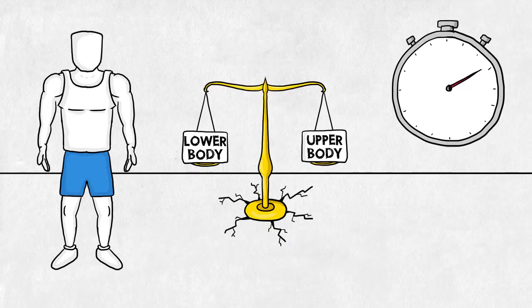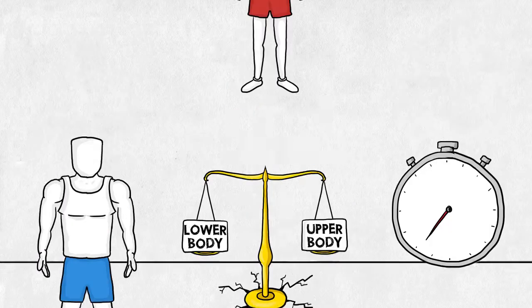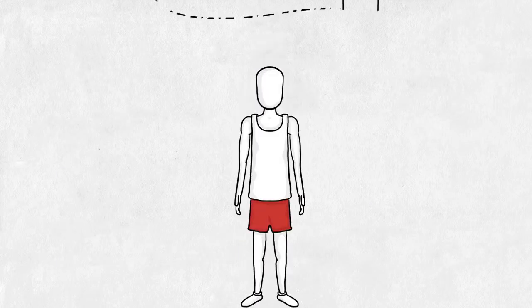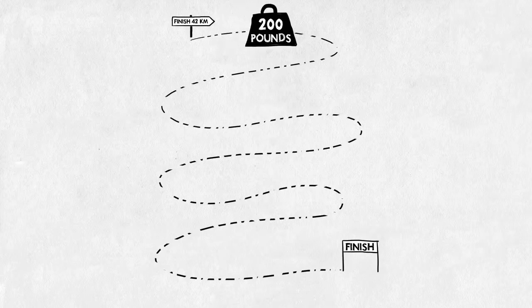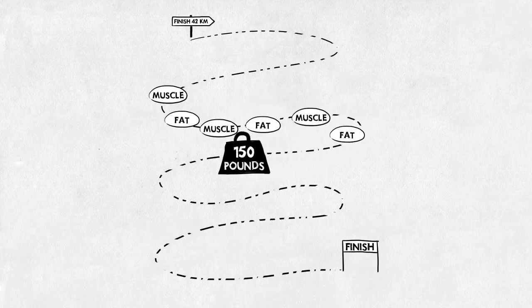And because the sprinter only has to perform for a couple of seconds, the added weight is trivial. The marathoner is a different story. Every pound in his body has to be carried around for a total of 42 kilometers. He gains a lot of benefits by being light. So all excessive muscle mass and fat has to be shed in order to be a top marathoner. That's why he looks so skinny.